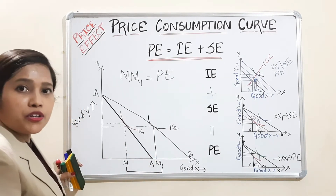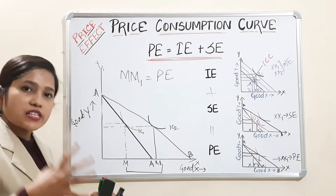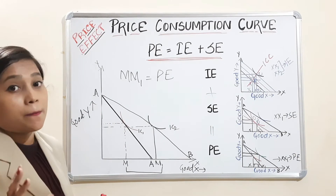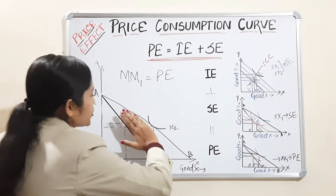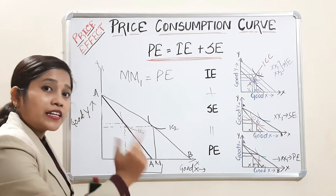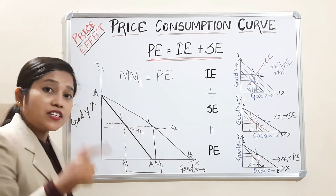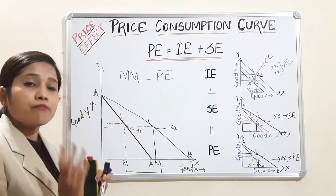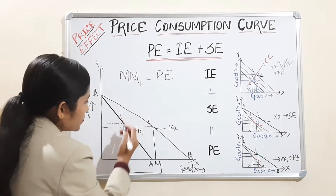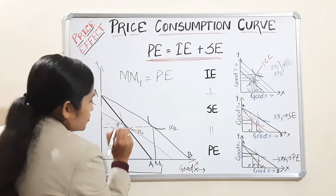To keep purchasing power constant, we decrease money income — that is called compensating variation. For this, we shift the new budget line A-B downward, because when income decreases, the budget line shifts downward — in such a way that it is tangent to the initial indifference curve.